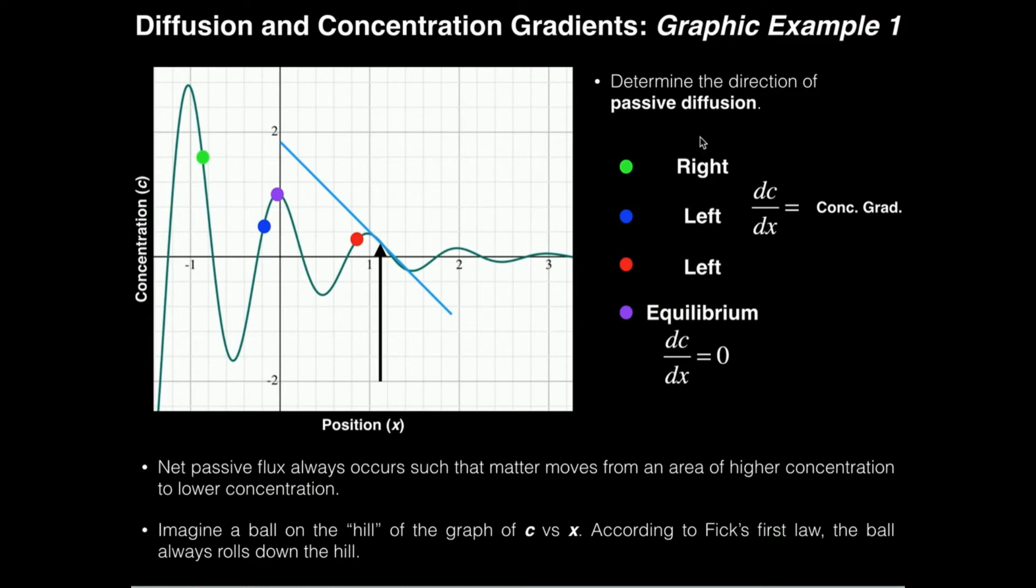Okay, now in conceptual terms it's really simple. Diffusion occurs or flux, we would say, occurs from an area of high concentration to low concentration. However, when we start talking about this graphically, we have to look at it in a little bit different way.